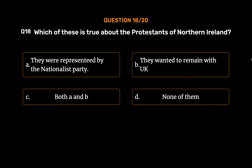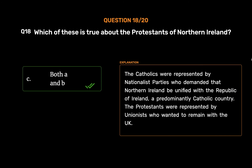The correct answer is Option C: Both A and B. The Catholics were represented by nationalist parties who demanded that Northern Ireland be unified with the Republic of Ireland, a predominantly Catholic country. The Protestants were represented by Unionists who wanted to remain with the UK.